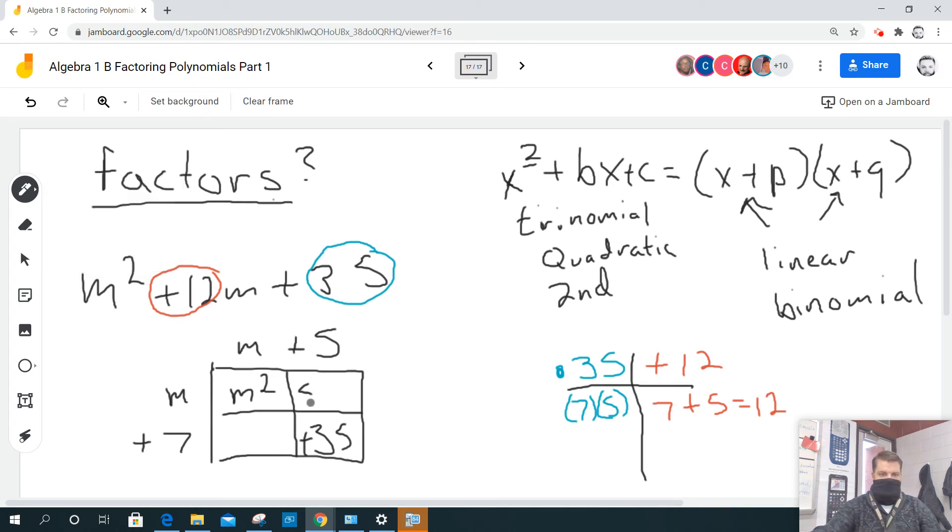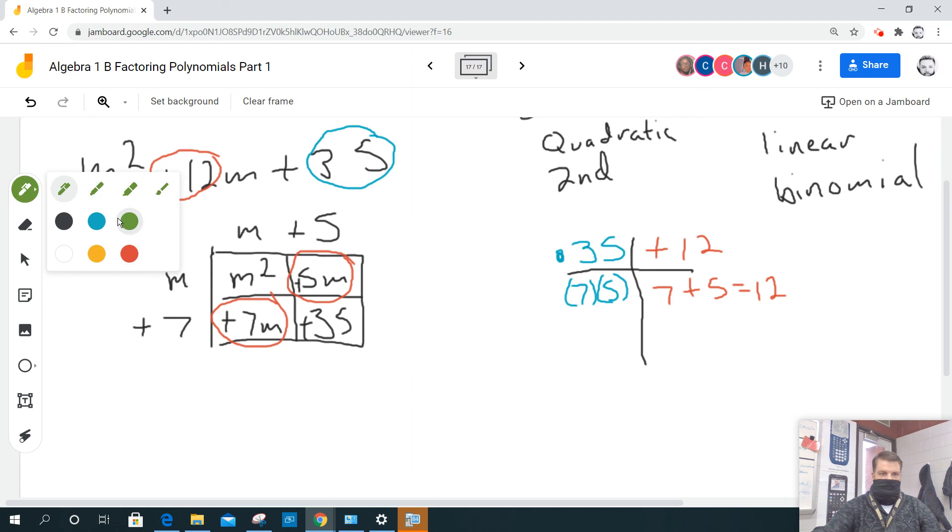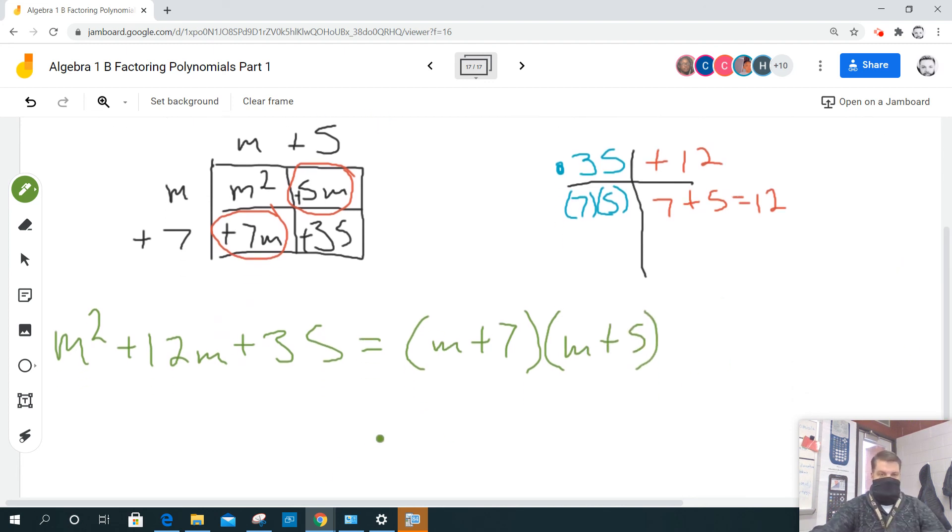Positive 5 times m is a positive 5m, and 7 times m is a positive 7m. And the cool thing about that is that this plus this equals 12m. So then I know for a fact that m squared plus 12m plus 35 is equal to m plus 7 times the quantity m plus 5.